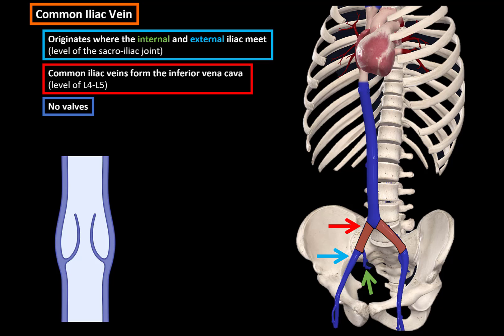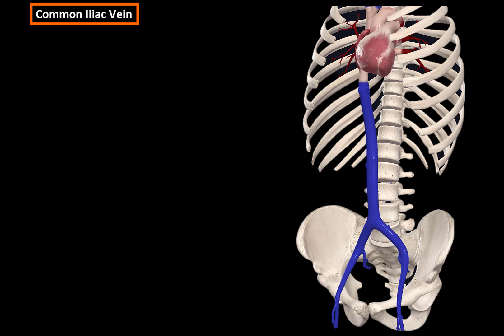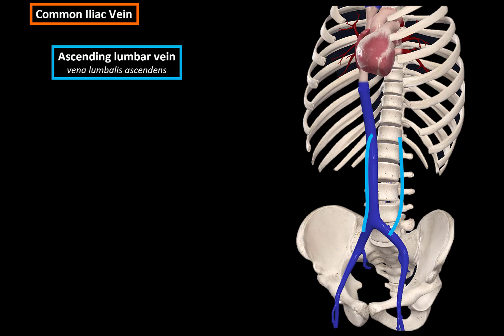Usually veins have valves to prevent the backflow of blood, so these large veins don't have any valves. The first tributary of the common iliac vein is the ascending lumbar vein. The right ascending lumbar vein will anastomose with the azygous vein, while the left one will anastomose with the hemi-azygous vein.